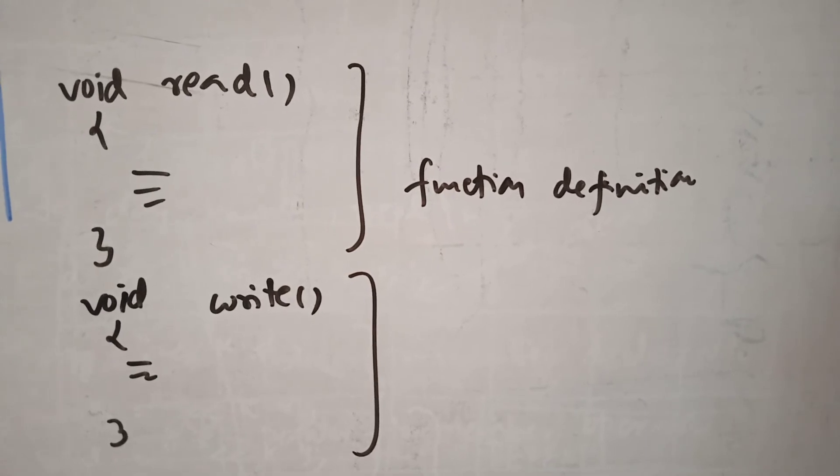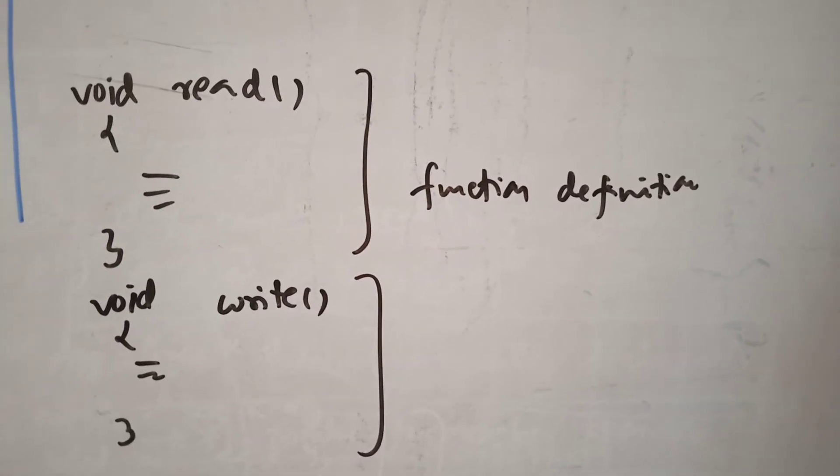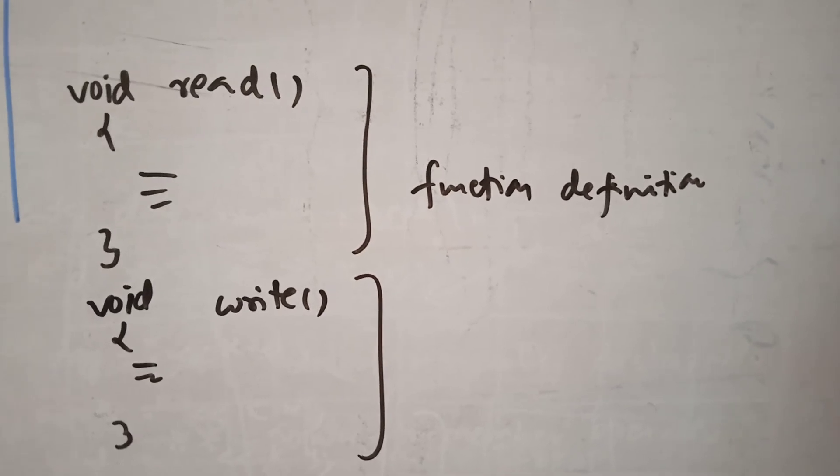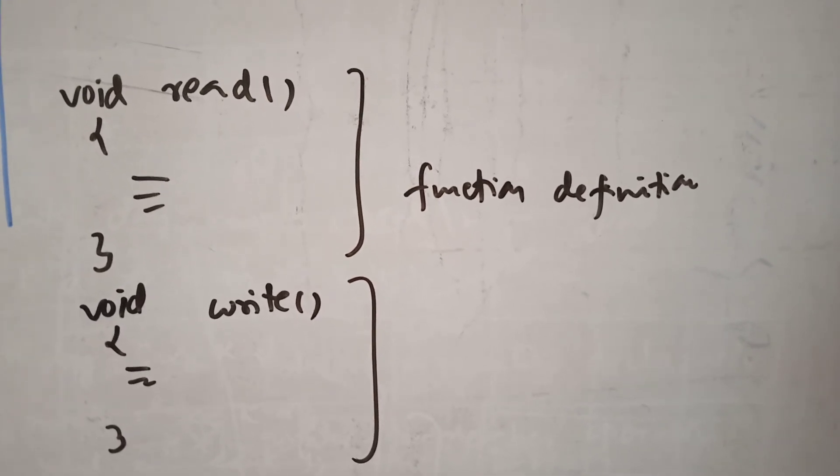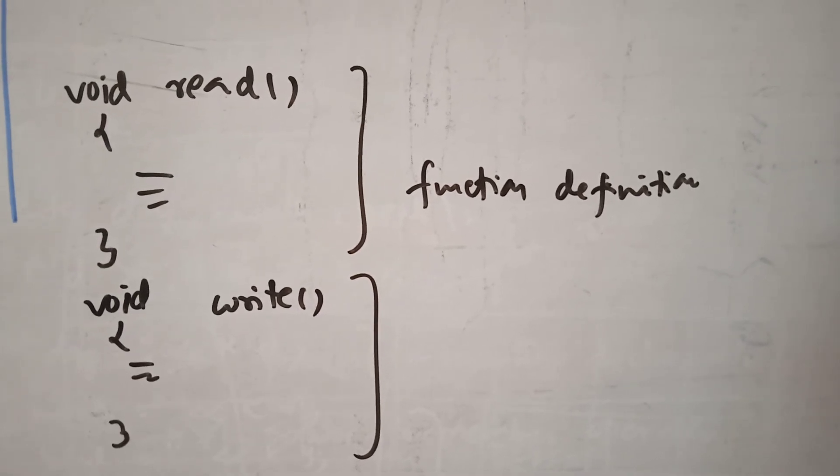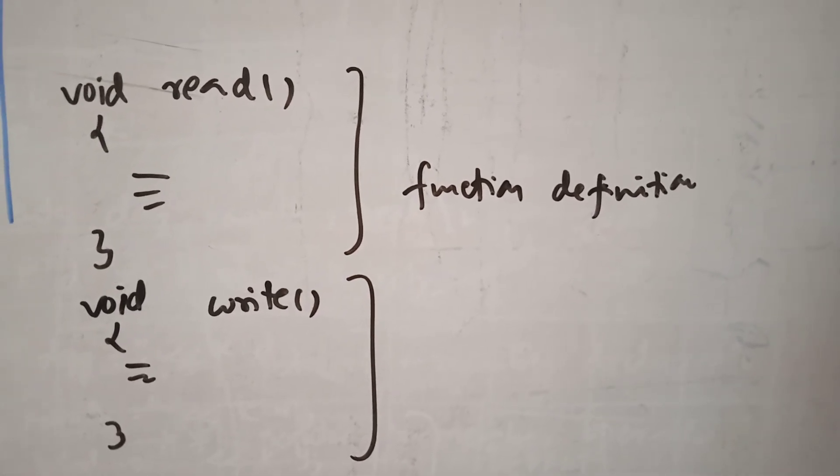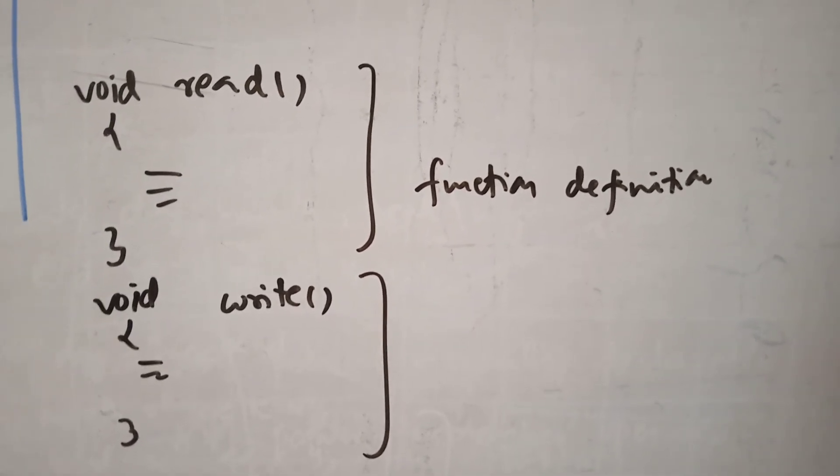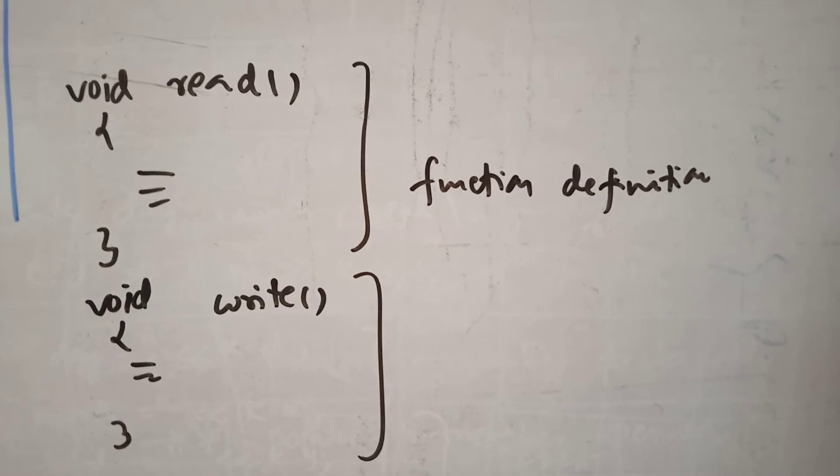So these are the function definitions used in the program. The functions are defined in public. They are public because they can be accessible outside the class. The roll number name which are declared as private cannot be accessed outside the class.